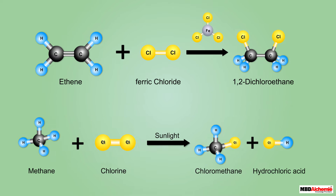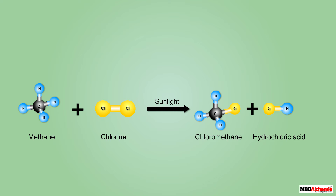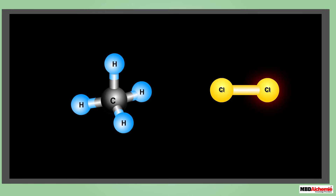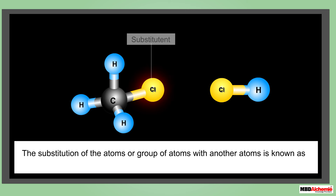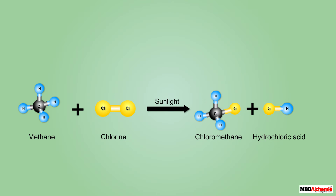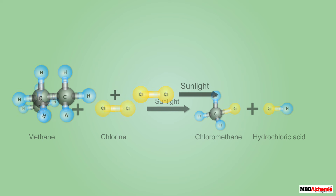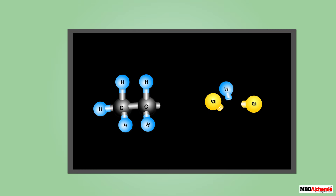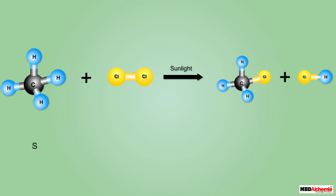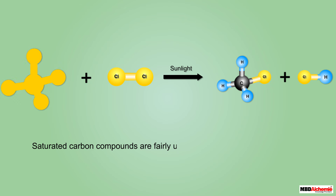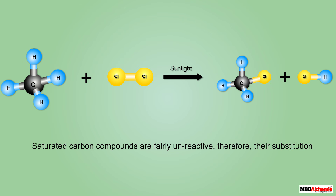Chlorine atoms replace, or substitute, the hydrogen atoms of methane. Since the reaction involves the substitution of hydrogen atoms with other atoms, it is known as the substitution reaction. Methane is not the only saturated compound that undergoes the substitution reaction — many other saturated carbon compounds undergo substitution reactions under suitable conditions.